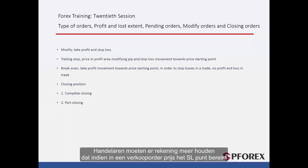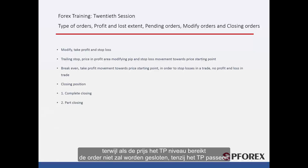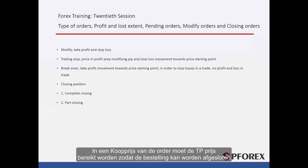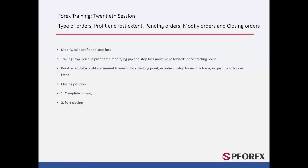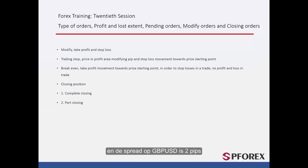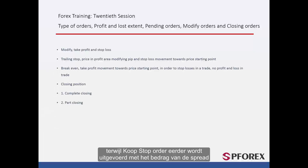Traders should note that in a sell order, if price meets the SL point, the order will be closed. However, if price reaches the TP level, the order will not be closed unless it passes TP plus the amount of spread. In a buy order, price must reach the TP price for the order to be closed. If price moves towards SL, the order will be closed even if it does not reach the SL price exactly, because SL price plus spread is closer to the order price. For example, if the SL price is 1.66955 and the spread on GBP/USD is 2 pips, the order will be closed at 1.66975. On a sell stop order, the platform will execute the pending order as soon as price reaches the sell stop price, while a buy stop order will be executed sooner by the amount of spread.